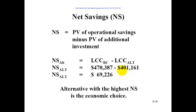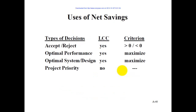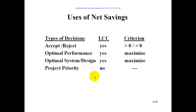If net savings is negative, you wouldn't want to proceed with the project because your base case costs are lower than the alternative. We can use net savings to accept or reject a project — the criterion is greater than zero we accept, less than zero we reject. We can also use it for optimal performance and optimal system design. For example, if we had multiple bulb options for light fixtures, or multiple HVAC control strategies or HVAC systems, we could look at net savings of each and make a decision.